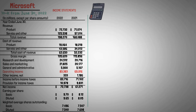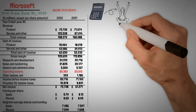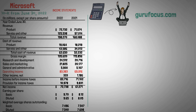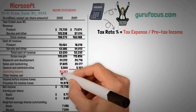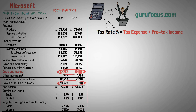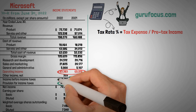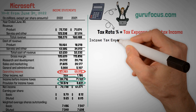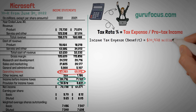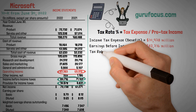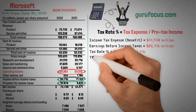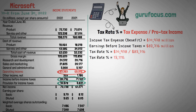Next, we need to calculate the tax rate for Microsoft — or you could use your favorite website such as gurufocus.com. To find the effective tax rate, we use: tax rate percentage equals tax expense divided by pre-tax income. From the income statement: income tax expense equals $10,978 million; earnings before income taxes equals $83,716 million. Therefore, the tax rate equals $10,978 divided by $83,716, which equals 13.11%.